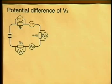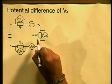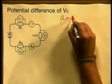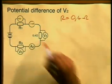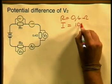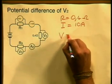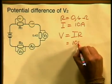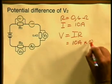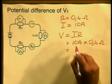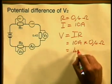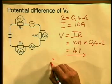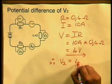Now let's continue with our calculations. This time, we will calculate the value of the voltmeter V2. We know that the resistance of the resistor is equal to 0.4 ohms and that the current that passes through the resistor is equal to 10 amperes. Applying V is equal to I times R — 10 amperes multiplied by 0.4 ohms — gives us a value of 4 volts. Therefore, V2 is equal to 4 volts.